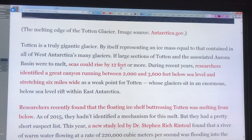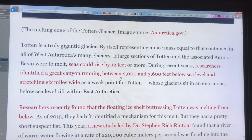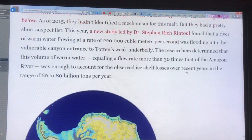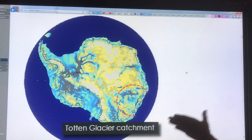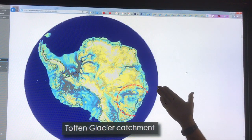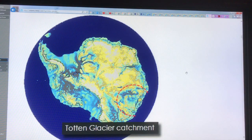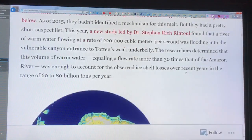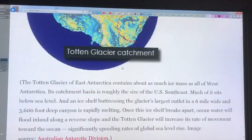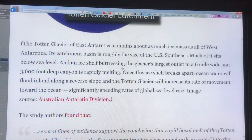This glacier, if it was to melt out, would raise sea level by 12 feet or more. There's a big canyon running below sea level, 6 miles wide. It's basically a weak point for this glacier. This new study has shown huge amounts of warm water are flowing into this canyon and undercutting the Totten Glacier. It's a big part of East Antarctic glaciers liable to raise sea levels significantly—12 feet.